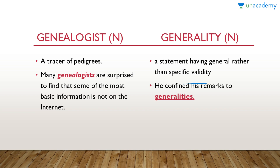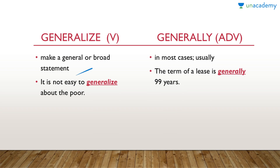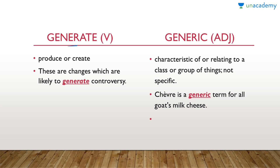Generality is a noun, which means a statement having general rather than specific validity. In a sentence: 'He confined his remarks to generalities.' Generalize is a verb, which means to make a general or broad statement. In a sentence: 'It is not easy to generalize about the poor.' Generally is an adverb, which means in most cases, usually. In a sentence: 'The term of a lease is generally 99 years.' Generate is a verb, which means to produce or create. In a sentence: 'There are changes which are likely to generate controversy.' Generic is an adjective, which means characteristic of or relating to a class or group of things, not specific. In a sentence: 'Chevret is a generic term for all goat's milk cheese.'